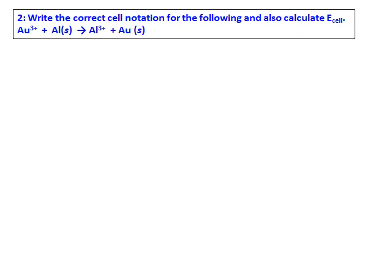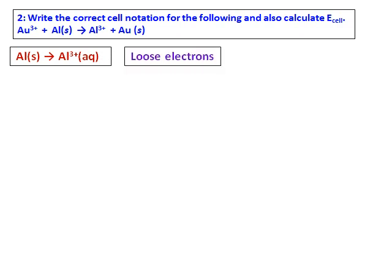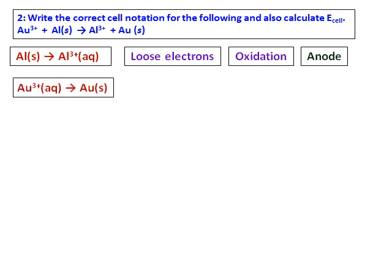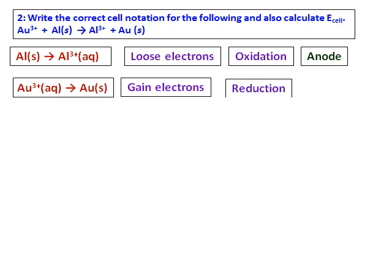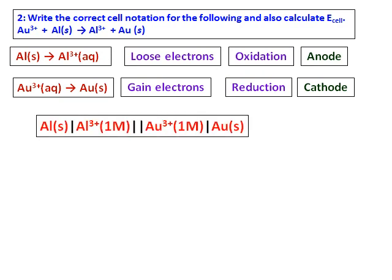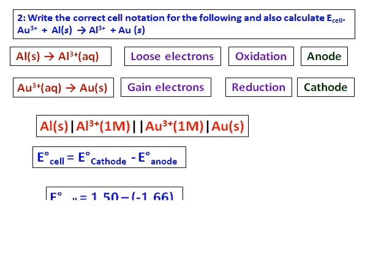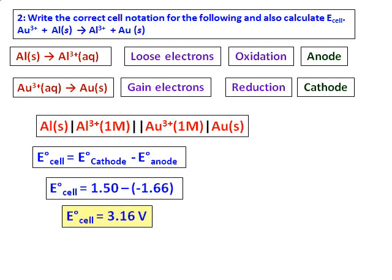For the next problem, write the correct cell notation and calculate E_cell. Dividing into two half-equations: aluminum becoming Al³⁺ loses electrons — that is oxidation — so aluminum acts as the anode. Au³⁺ becoming Au gains electrons — that is reduction — so Au acts as the cathode. The cell notation is written with the anode first: Al | Al³⁺ || Au³⁺ | Au. E_cell = E_cathode − E_anode; substitute reduction potential values from the table to obtain E_cell.